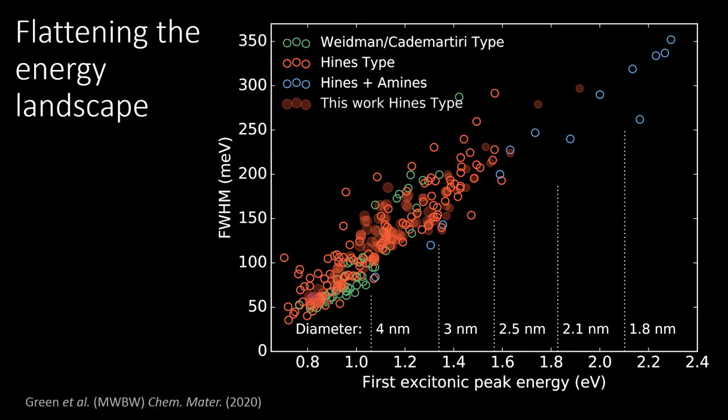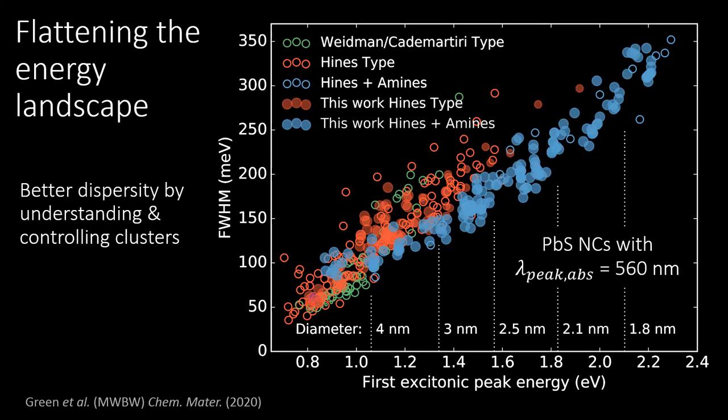Now that we have shown that amines and glycol ethers can efficiently tune the final particle size at reaction completion, the question is: did we obtain conditions that yield small size distributions? The answer is yes — we can reproducibly synthesize small nanocrystals at reaction completion with record narrow full width at half max, and with absorption features extending to the visible with energies as high as 560 nm and clear visible emission.